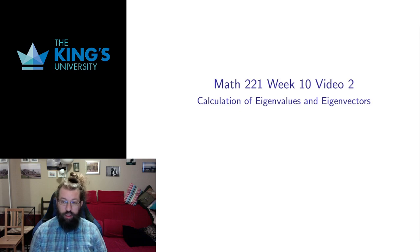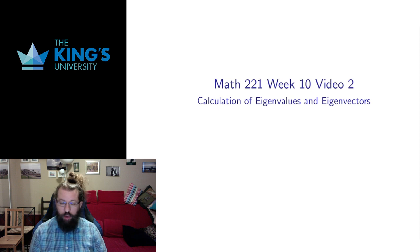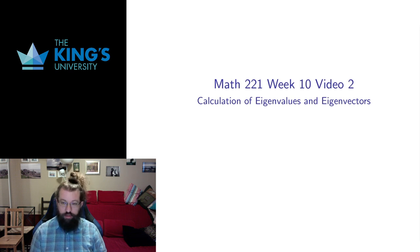Welcome to video 2 for week 10. In the previous video, I defined an eigenvalue and an eigenvector — eigenvectors being directions that were preserved by a matrix, and eigenvalues being the scaling factor by which those vectors were changed. Their direction can remain the same, but they could be scaled, flipped, or even sent to zero.